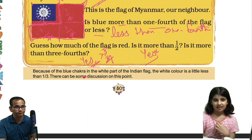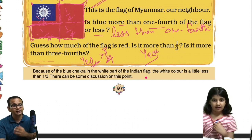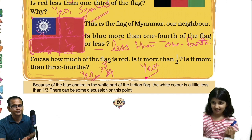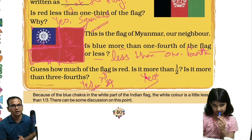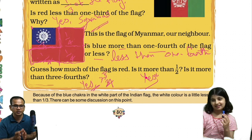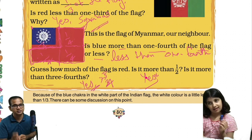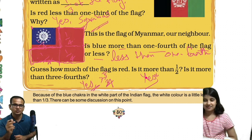Because of the blue Ashoka Chakra in the white part of the Indian flag, the white color is a little less than one third. There can be some discussion on this point — we have already discussed that. That's all in this video. We have completed page number 50. If you like this video, don't forget to like, share, and subscribe to this channel. Thanks, see you in the next video.